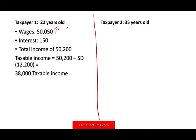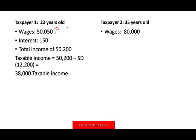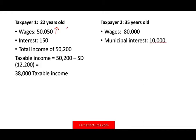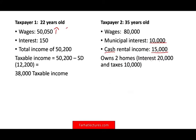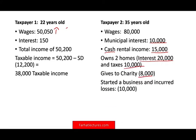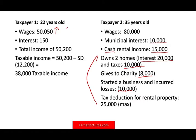Now let's look at Taxpayer Two — already established, 35 years old, very successful. They make $80,000. They have municipal interest of $10,000, cash rental income of $15,000 from a rental property. They own two homes and pay $20,000 in interest and $10,000 in taxes. They gave $8,000 to charity, started a business with $10,000 of losses, and have a tax deduction on rental property of $25,000 due to large depreciation. On paper, they're losing.